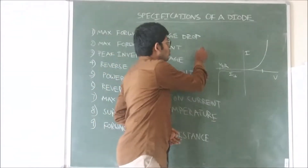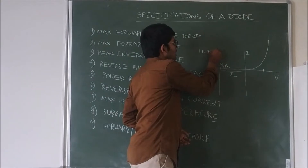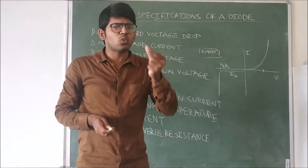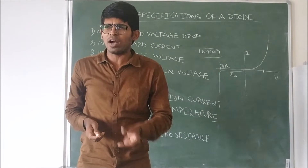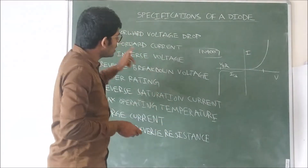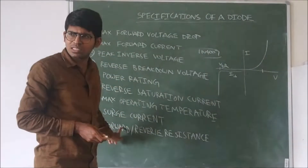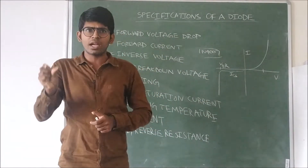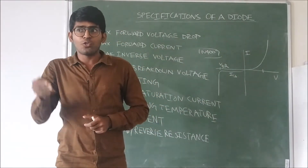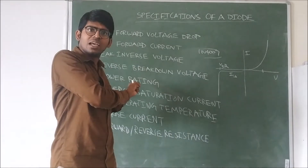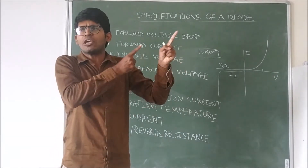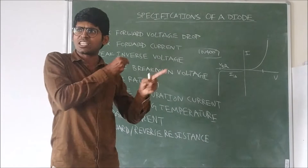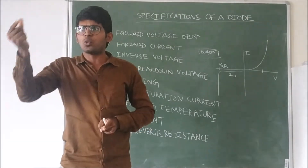Those diodes — for example, 1N4007 — normally the diodes we are using in the laboratories. Every diode has one data sheet. What is this data sheet? All these specifications are given in that sheet. So whenever you are using a diode, if you have seen this data sheet, then you have understood the diode, and with these specifications keeping in mind, you are working.